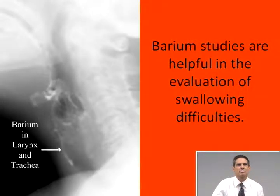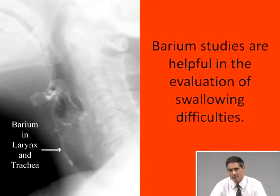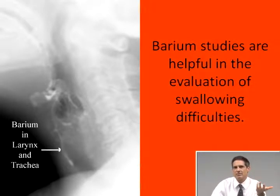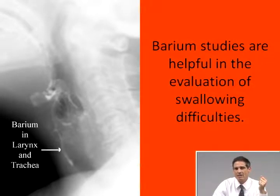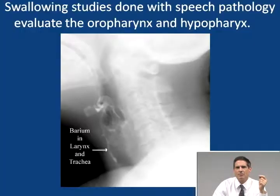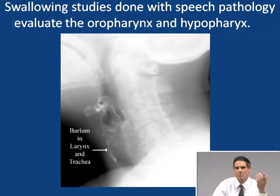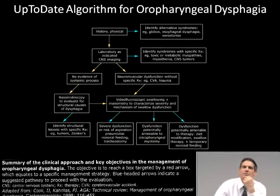That leaves us with our fourth point. Barium studies can be helpful in the evaluation of swallowing difficulties. I've already talked about the mechanics — fluoroscopy with a speech pathologist evaluating the oropharynx and hypopharynx, looking for smooth transitional flow of contrast material. There are algorithms in the literature from UpToDate for this approach.